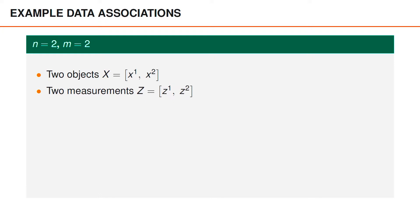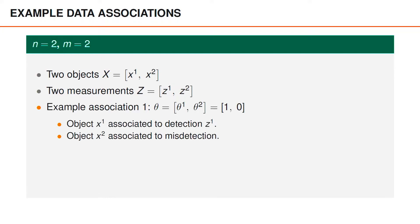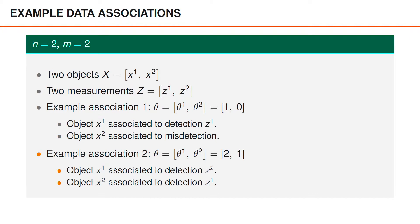Let's look at an example with two objects with states X1 and X2, and two measurements Z1 and Z2. One possible association is the multi-object association Theta equal to the vector with elements 1 and 0. This means the object with state X1 is associated to detection Z1, and the object with state X2 is not associated to any measurement — that object is misdetected. Another possible association is the vector with elements 2 and 1, where X1 is associated to detection Z2, and X2 is associated to detection Z1.